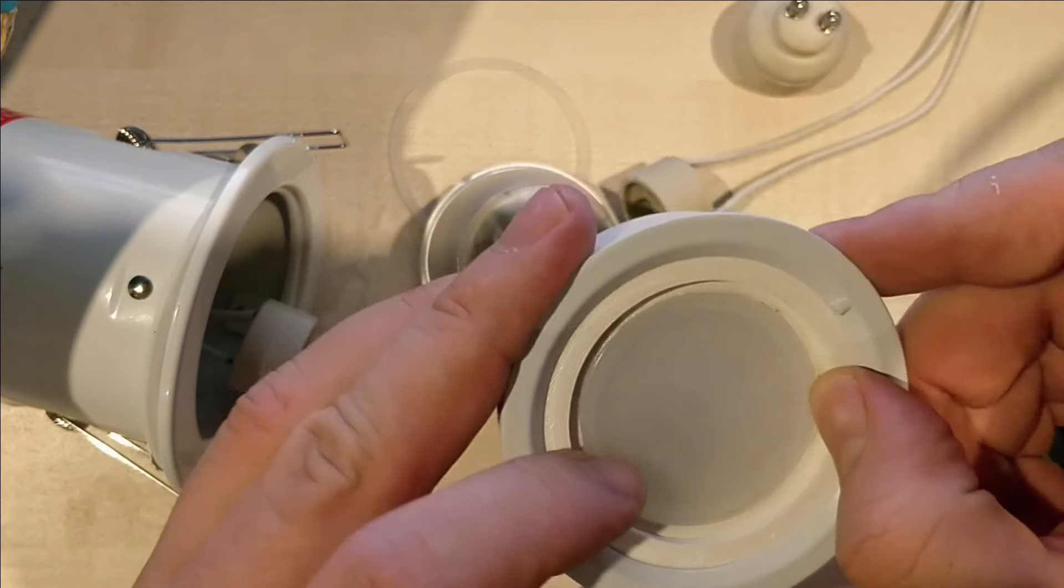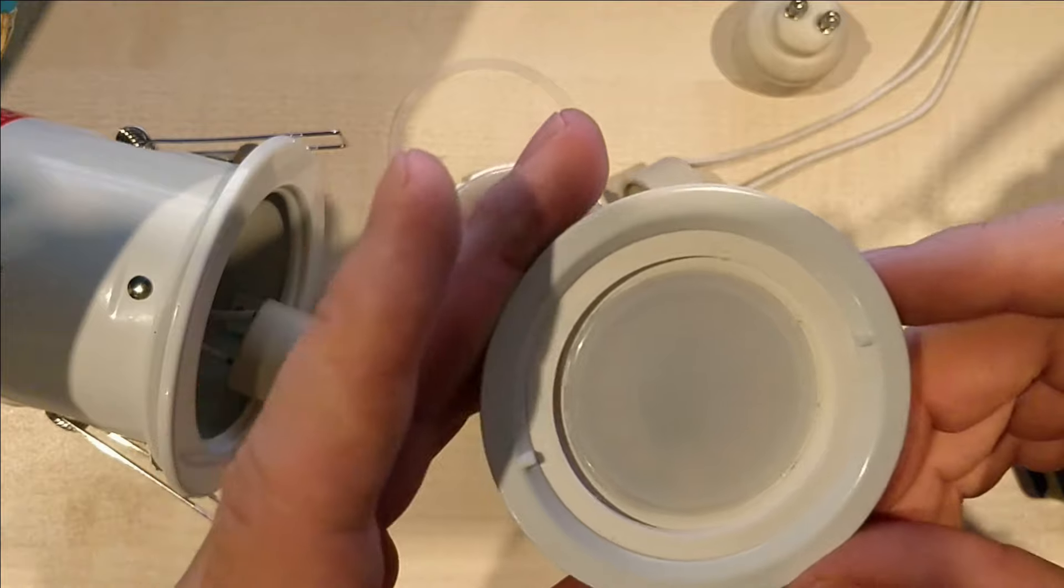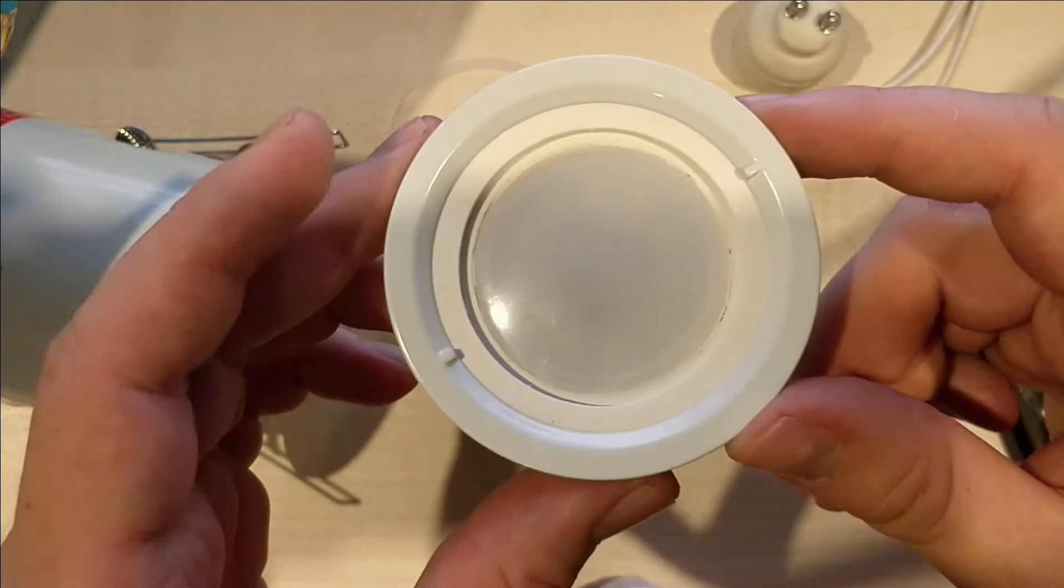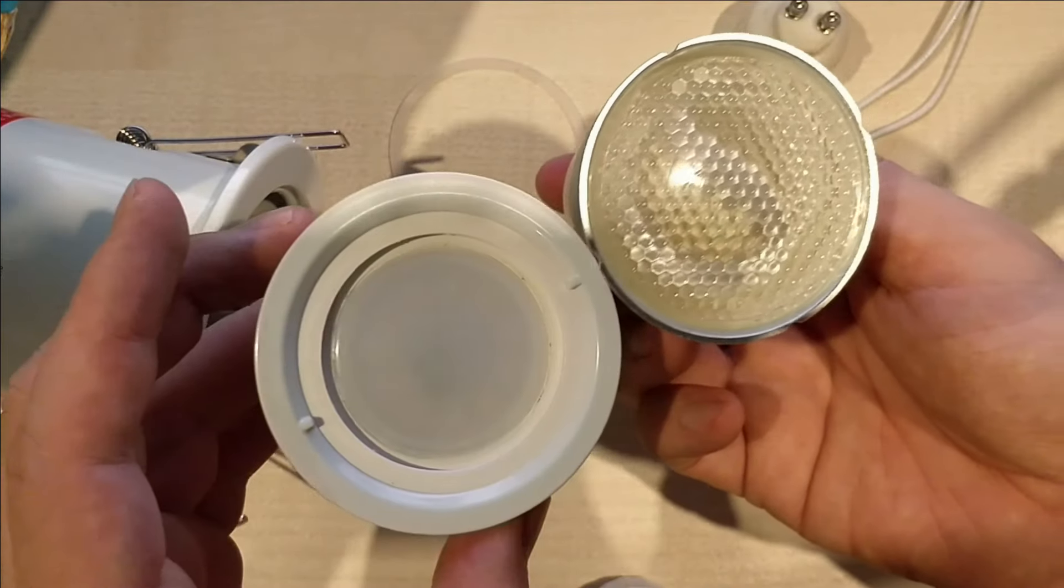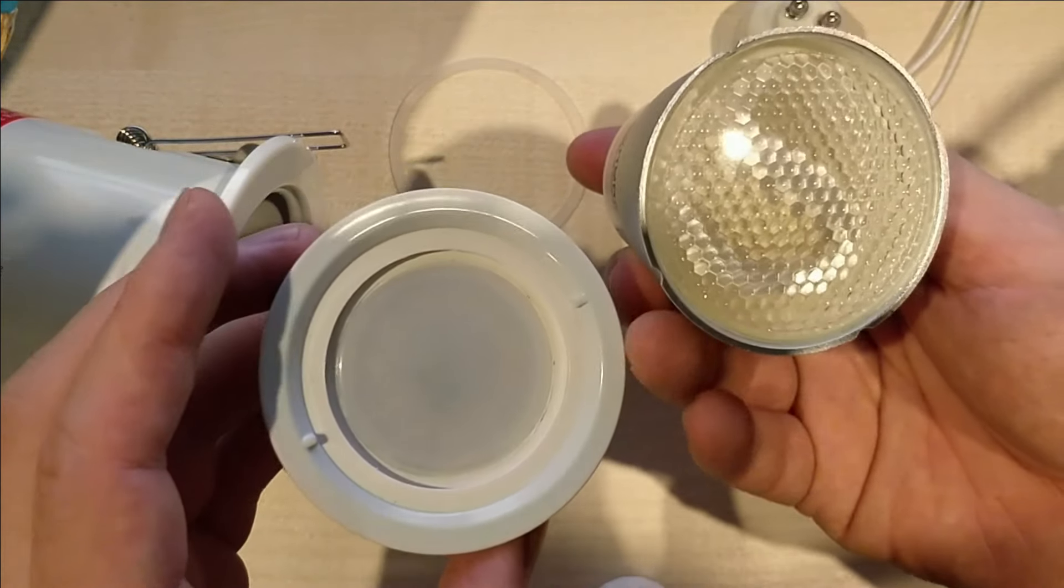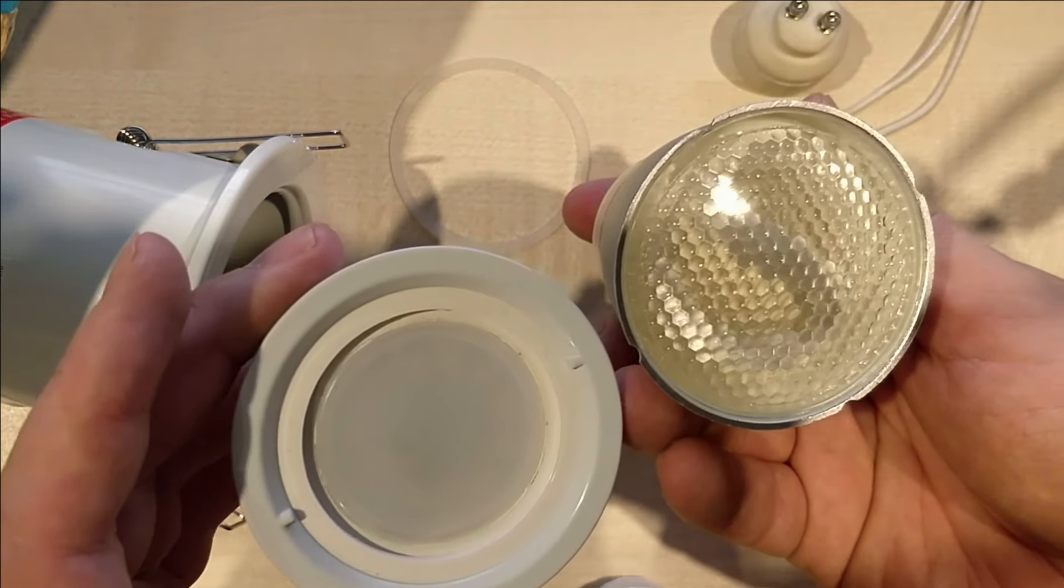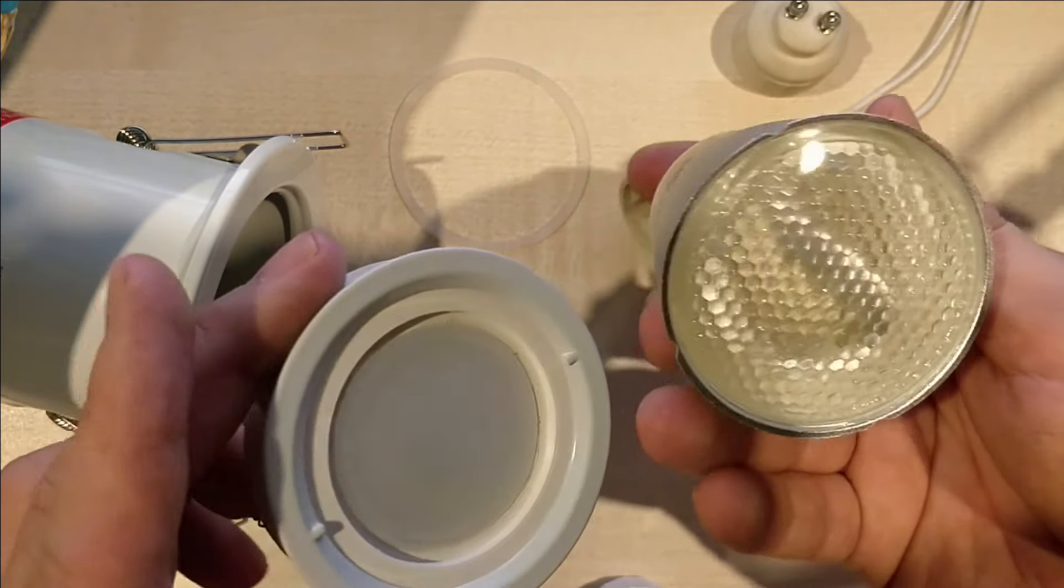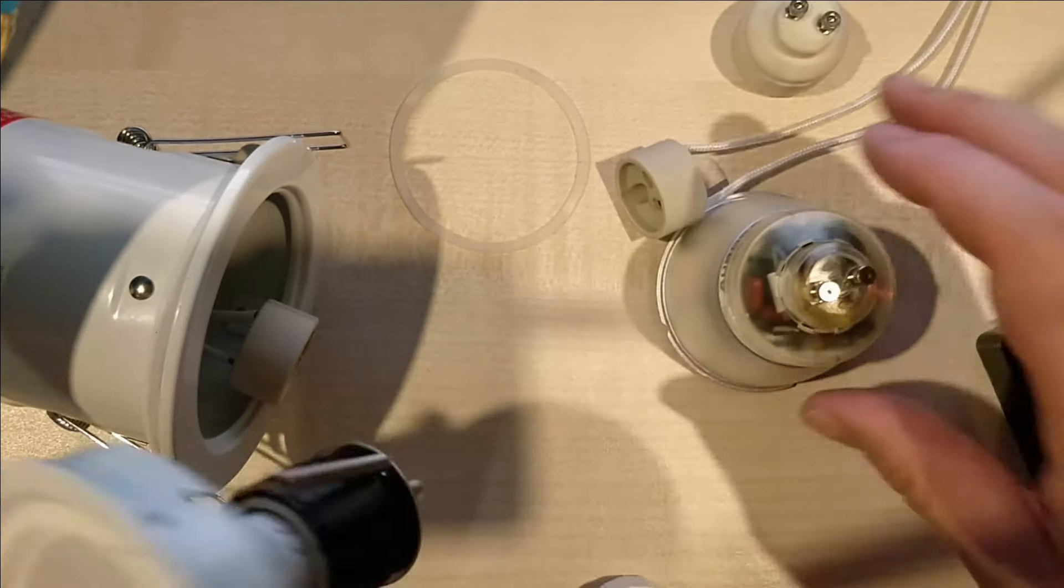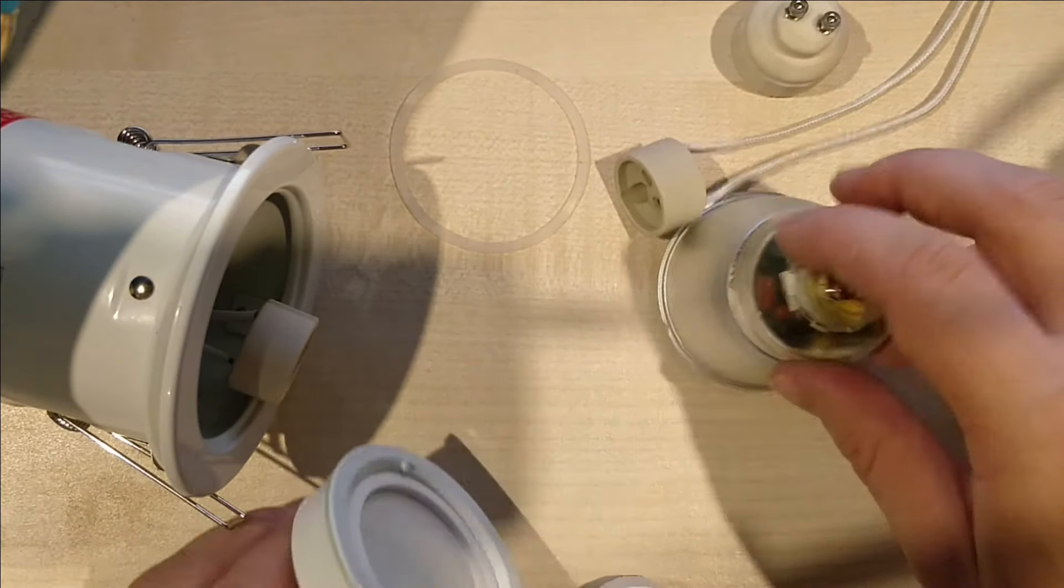And basically you end up with a pretty good replacement for the SGU-10 lamp. It doesn't have really any unsightly gaps anywhere. It does look slightly different than the original one, because it's glass, and this is sort of all white. You don't really notice it at all when the lamp is turned on, but when it's turned off, you can see it. And there is another thing you can do, actually.